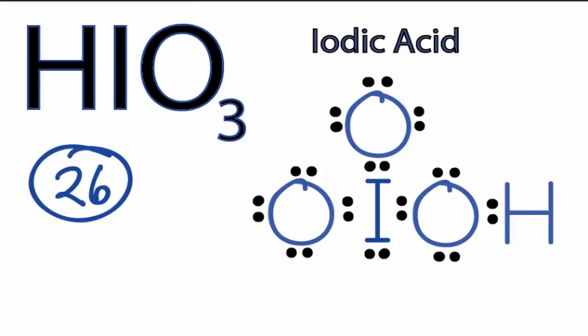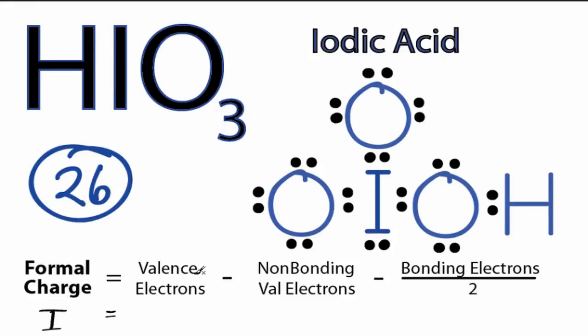But we need to check the formal charges to make sure that this is the most likely structure. So let's do that. So for the iodine there in the center, we know that iodine has 7 valence electrons on the periodic table. Non-bonding, we have 2 valence electrons. And then bonding, we have 2, 4, 6, which we'll divide by 2. So we have a total of 7 minus 2 minus 3. That gives us a plus 2 formal charge for the iodine.